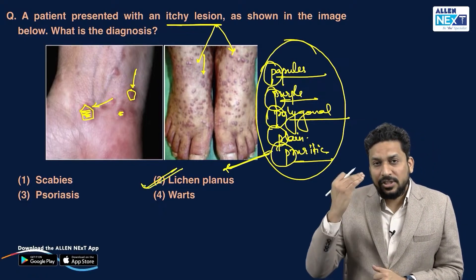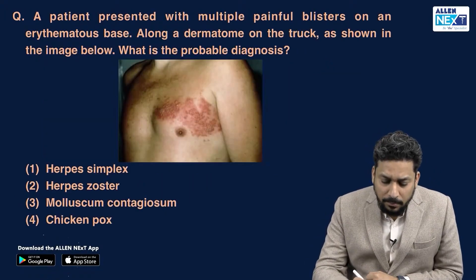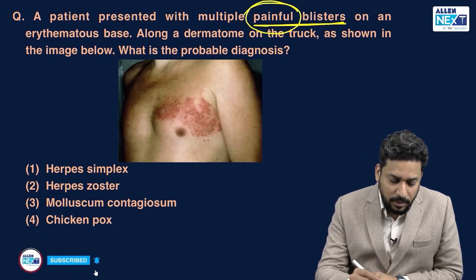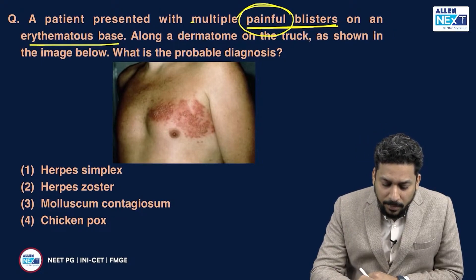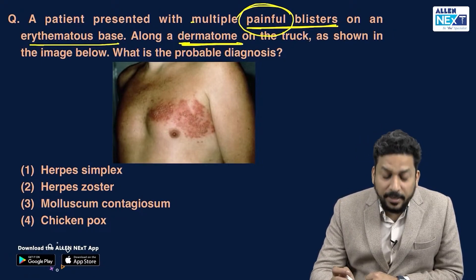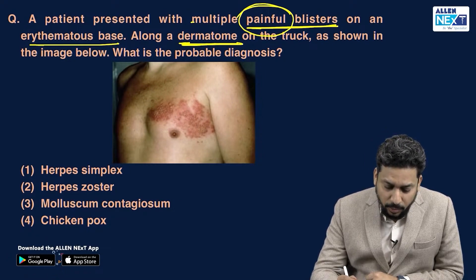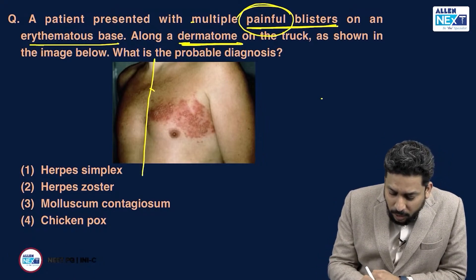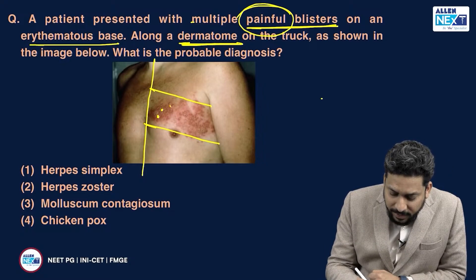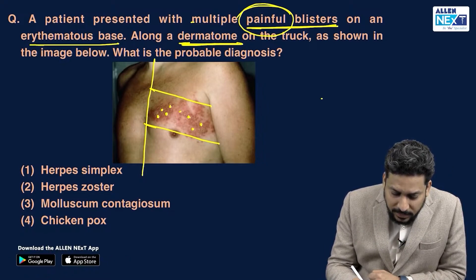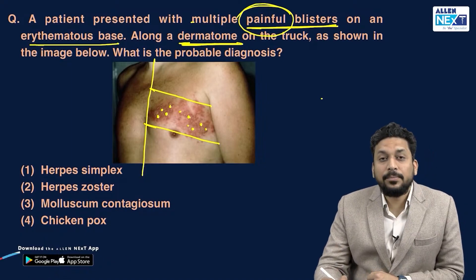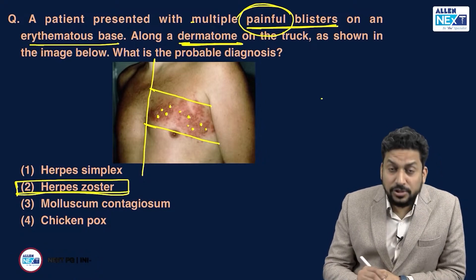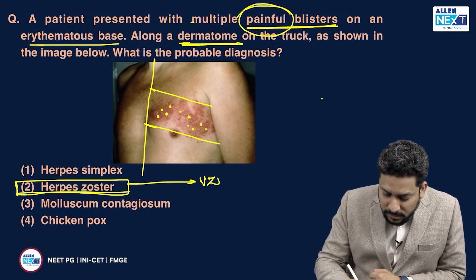Lichen planus is a condition where such lesions can be seen. Another patient presented with multiple painful blisters — fluid-filled lesions with an erythematous base along a particular dermatome of the trunk. The lesions are unilateral, along a particular nerve segment or dermatome, with vesicles. All these are pointing towards shingles, that is herpes zoster, which is due to reactivation of the varicella zoster virus.